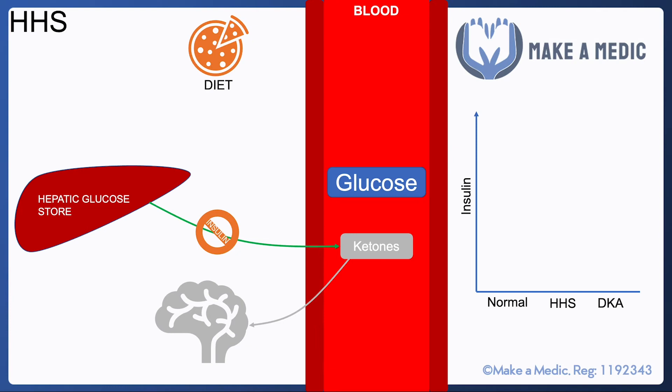Hyperosmolar hyperglycemic state, or HHS, is a complication that's usually associated with type 2 diabetes. It's something that's quite often misunderstood by students, or not given much attention in medical school, so I'm going to try and explain it as simply as possible here.